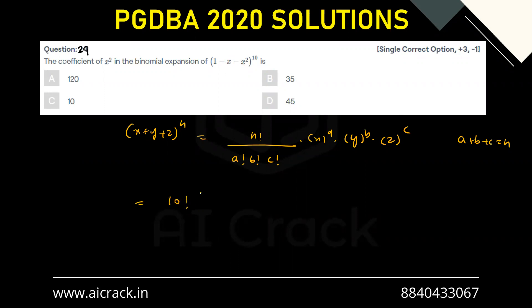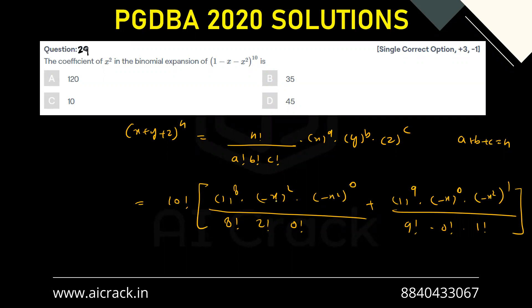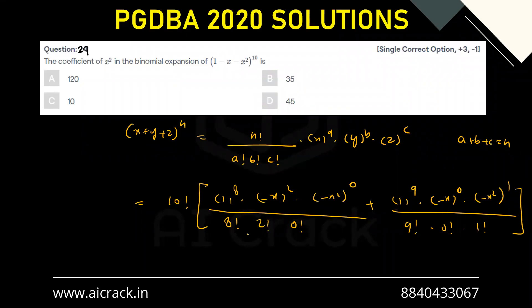So that would give me 10 factorial that would be common. 10 factorial multiplied by, so this is 1, this is 1, this is 1. So we'll take the x-square as common or you can put x equals to 1 over there because we have to find the coefficient only. So let's put x equals to 1. So I'll be getting 1, 1, 1 over here. So that would be 1, 1, 1 divided by 8 factorial 2 factorial.